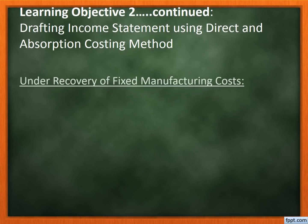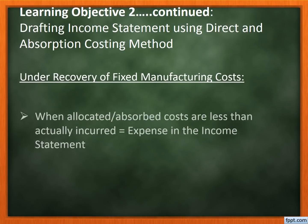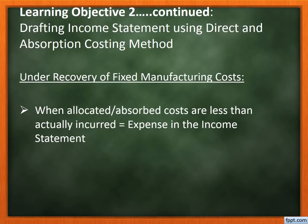The opposite is also true. An under recovery of fixed manufacturing cost is when the allocated or absorbed costs are less than what was actually incurred, and thus will be recognized as an expense in the income statement.